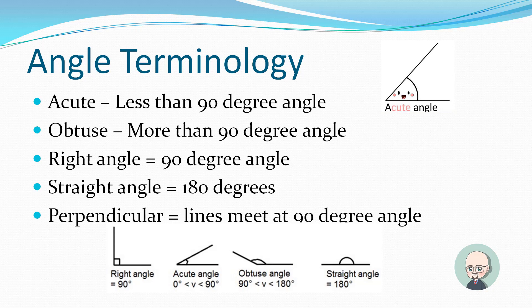Let's talk about some angle terminology. You will see some of this on the exam. An acute angle is less than 90 degrees. You see, I have a cute little diagram over there. Acute angle. See how it's tiny? That's one way to remember it. An obtuse angle is more than 90 degrees. A right angle is a 90 degree angle. A straight angle or a straight line is 180 degrees.